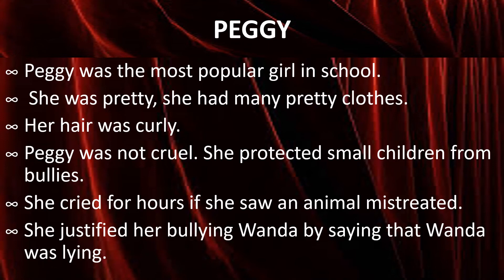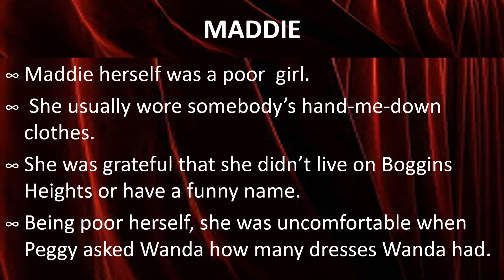Maddy was a follower and friend of Peggy. Maddy herself was a poor girl — she usually wore somebody's hand-me-down clothes, meaning second-hand clothes worn by a rich person and then given away as charity. She was grateful — thankful — that she didn't live on Boggins Heights or have a funny name. She was happy that at least people didn't know she was poor, nor was she different from the other American children. Being poor herself, she was uncomfortable when Peggy asked Wanda how many dresses she had, because Maddy herself didn't have many dresses.